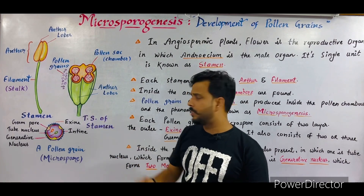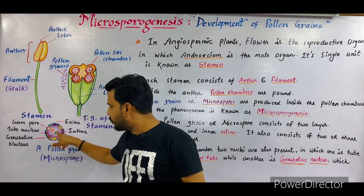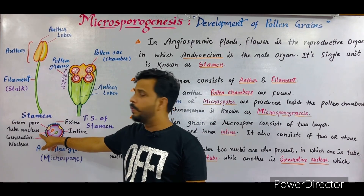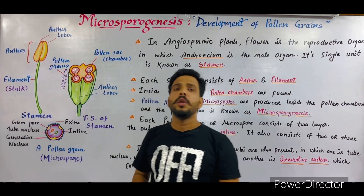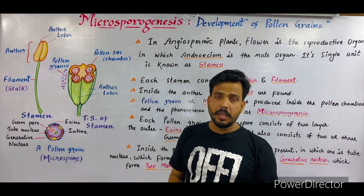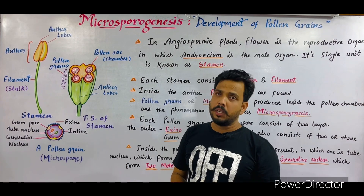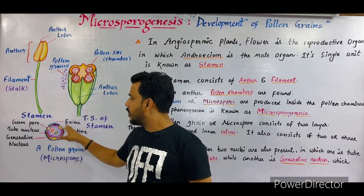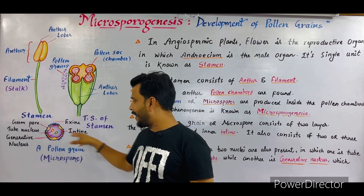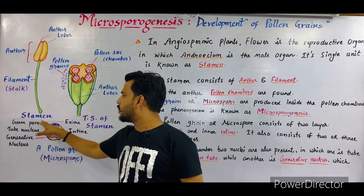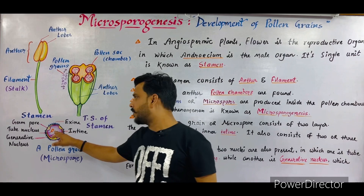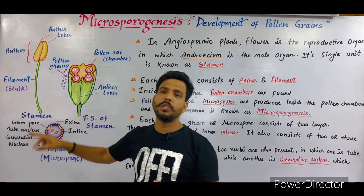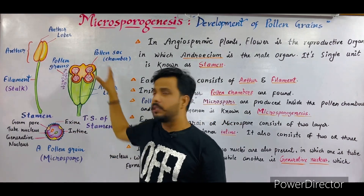Inside the cytoplasm of the pollen grain, there are two nuclei. One is known as the tube nucleus, which forms the pollen tube, while the other is the generative nucleus, which forms two male gametes. In angiospermic plants, two male gametes are produced. So, the outer layer is exine, the inner is intine, the weak portions of intine are germ pores, and inside the pollen grain two nuclei are present: tube nucleus and generative nucleus.